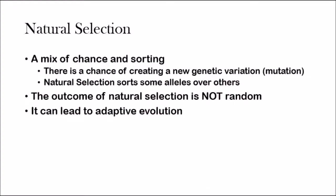In natural selection, there's a mix of chance and sorting. Natural selection can, by chance, create a new genetic variation — that's the chance part in a mutation. But then, once after the chance, which is the new genetic variation, natural selection acts and it sorts some alleles over others. Therefore, the outcome of natural selection is not random. Natural selection is focused, and it leads to adaptive evolution, which again is when an organism becomes more suited for its environment.